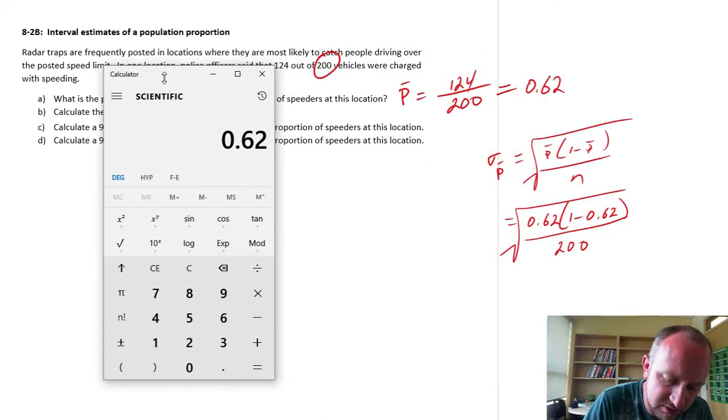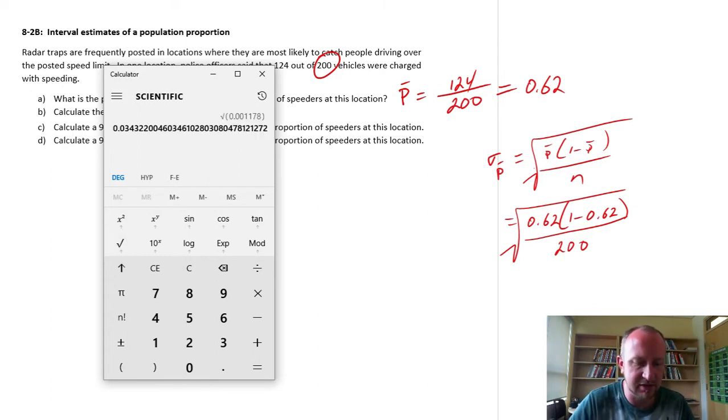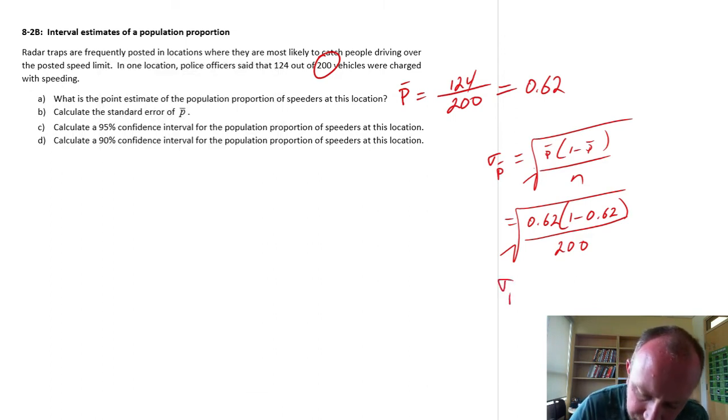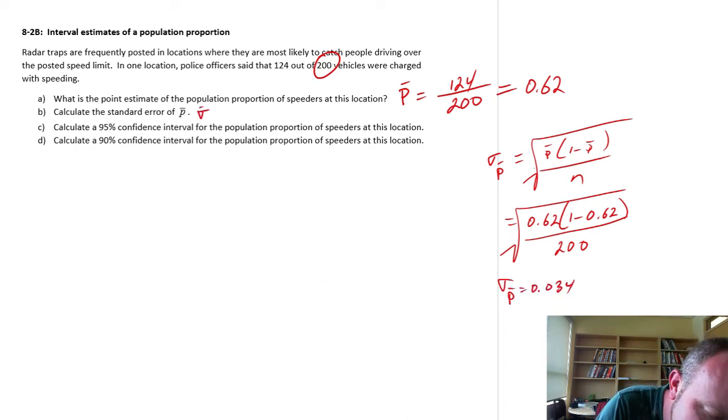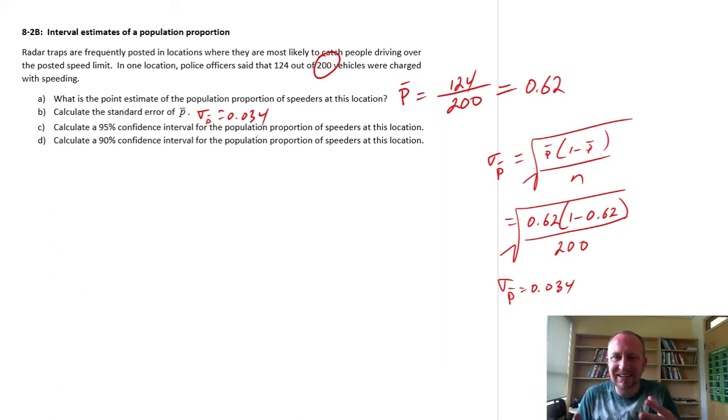So there's 0.62 times open brackets 1 minus 0.62, and we divide this by our sample size of 200 and square root that, and I have 0.034. So there's my answer for part B, 0.034. We're just getting the ingredients here for our confidence intervals.